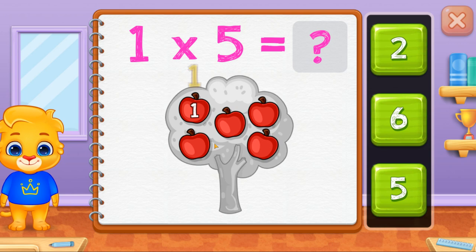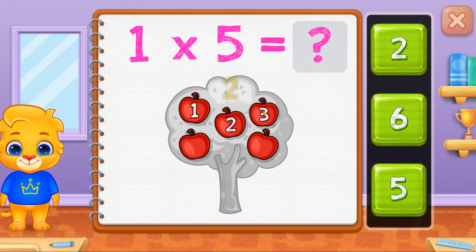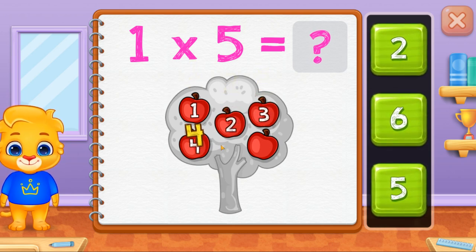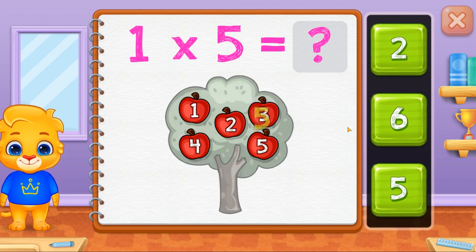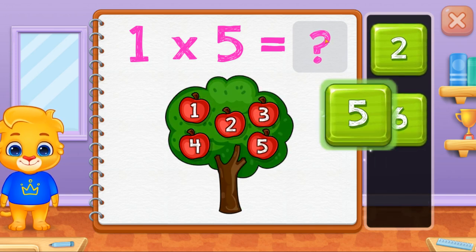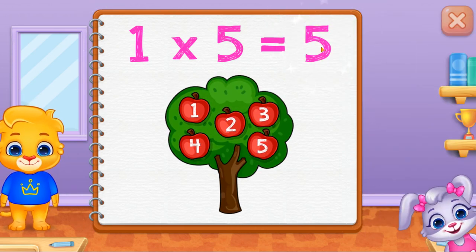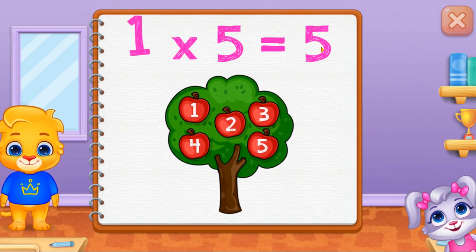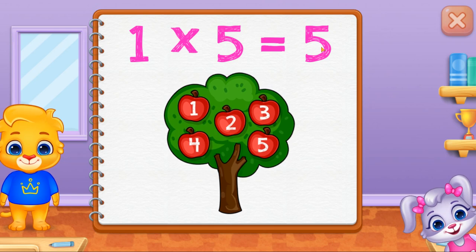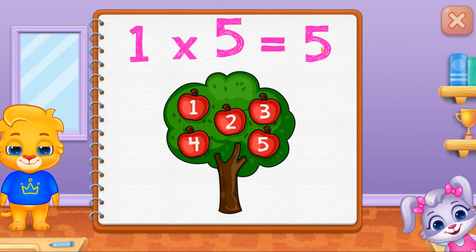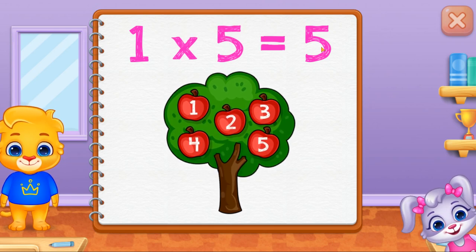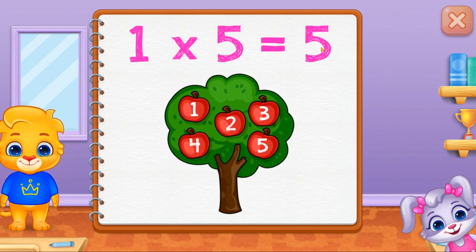One, two, three, four, five. One times five equals five.